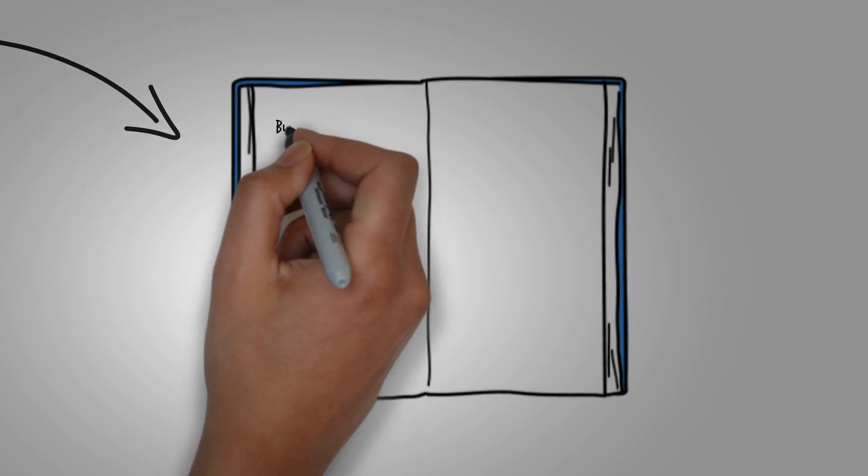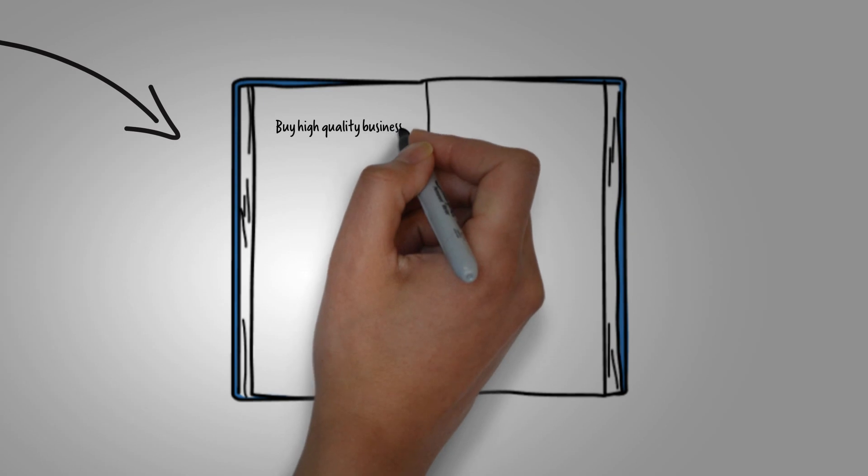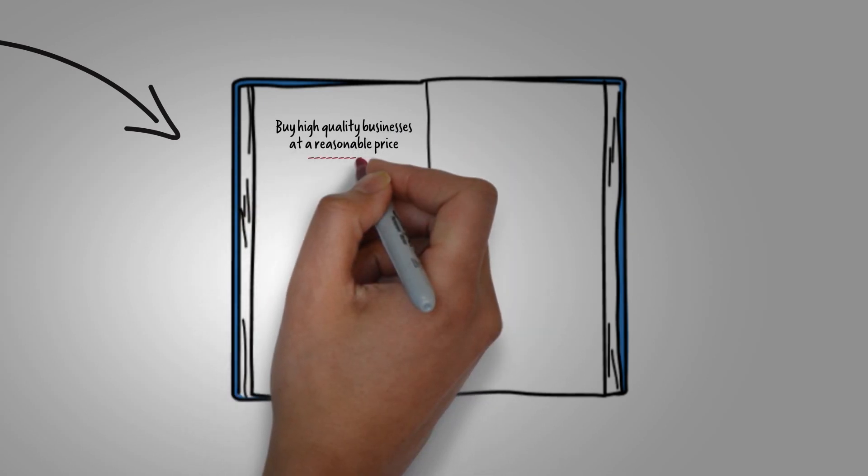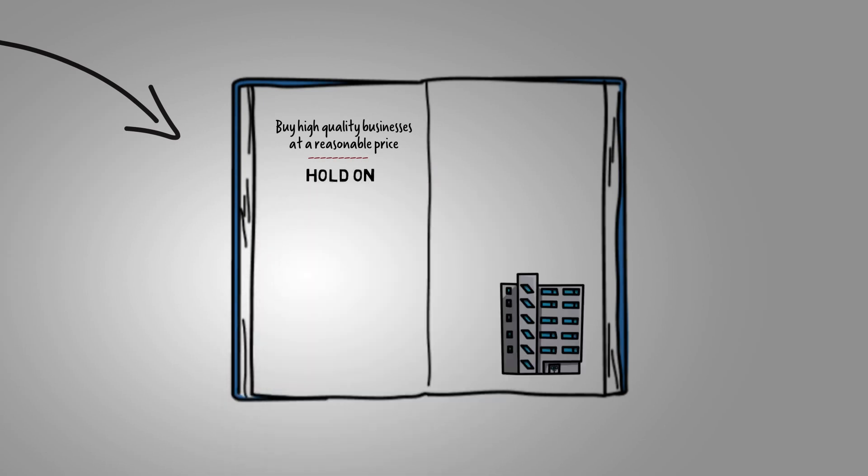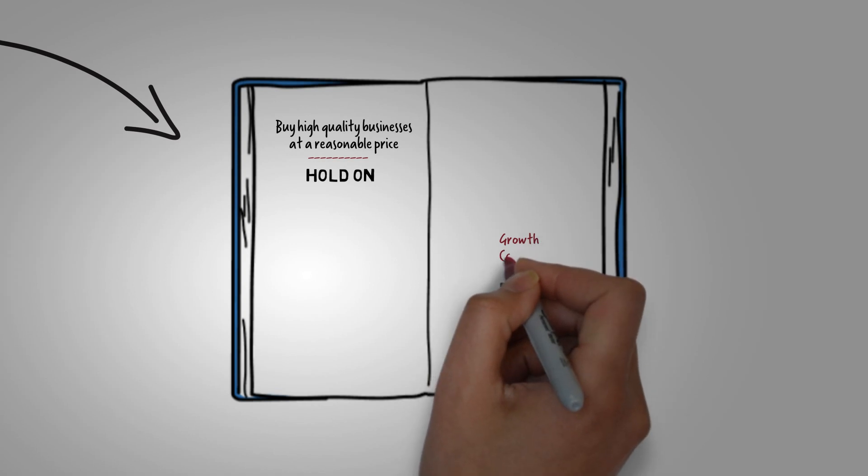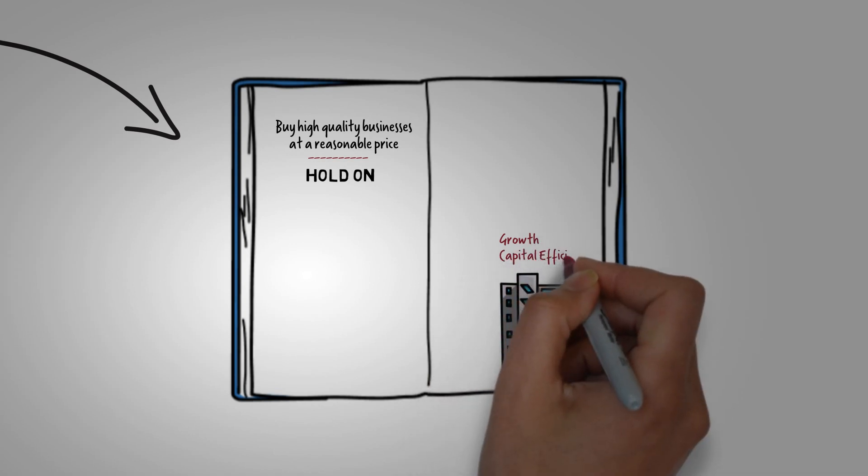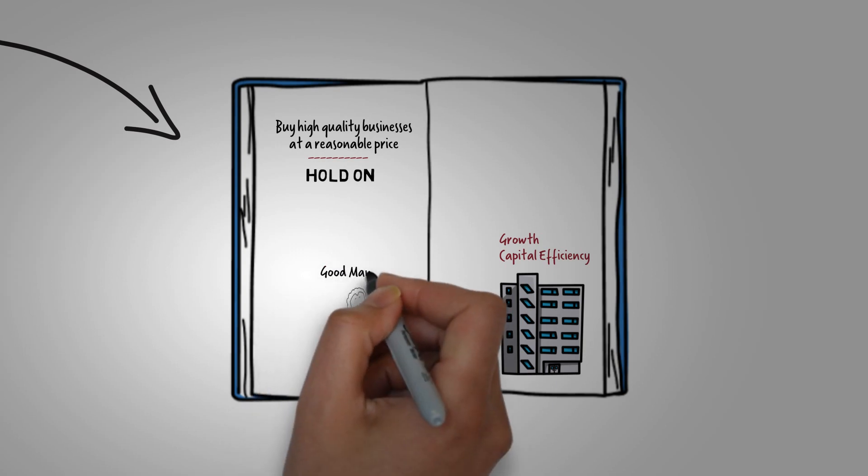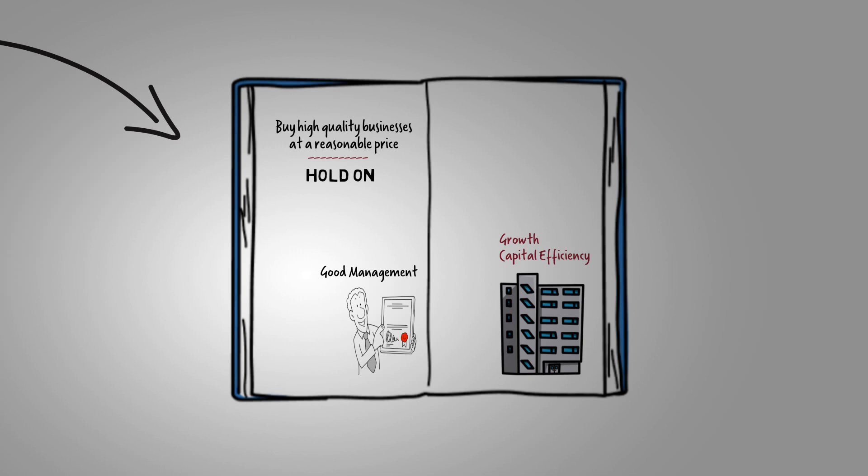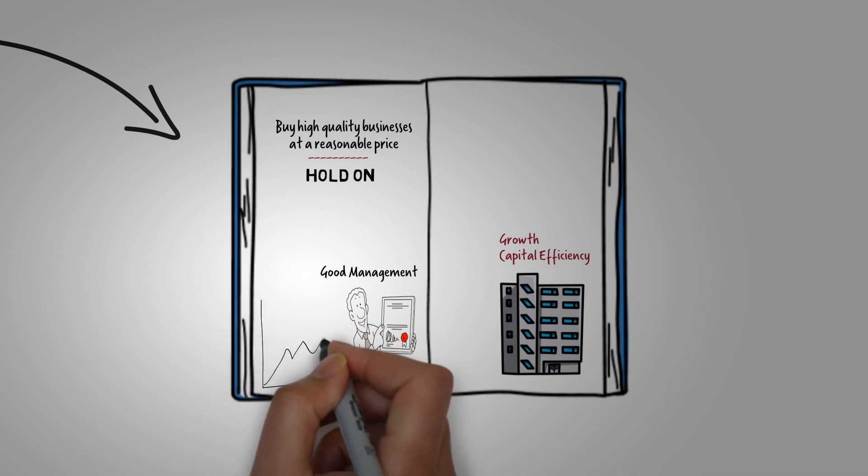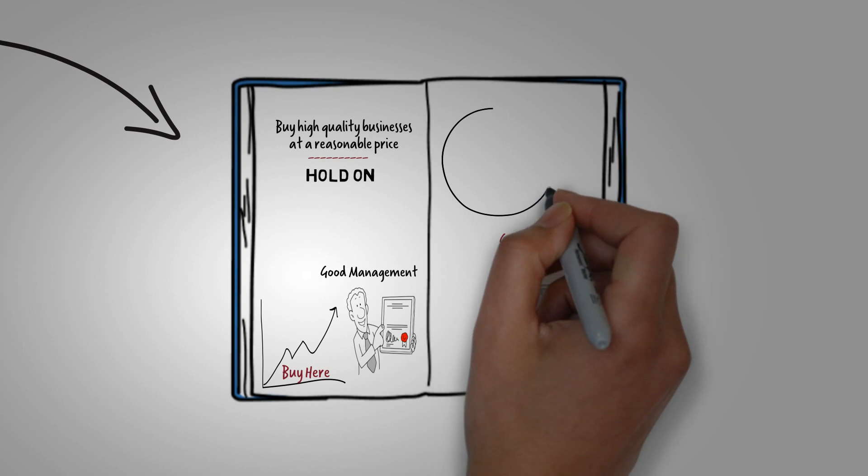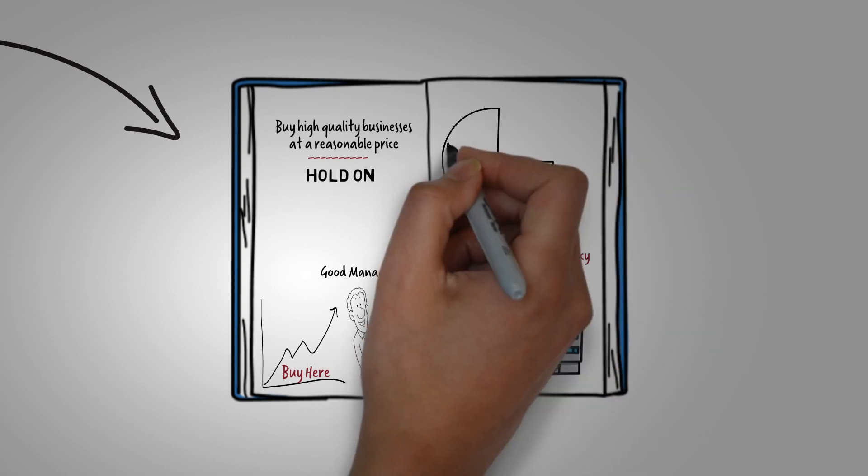The Mirai Asset Multi-Cap Fund is specifically designed to address this challenge by investing in high-quality growth businesses at a reasonable price and then holding them for an extended period. The fund's investment strategy revolves around identifying companies with promising growth prospects and capital efficiency. Additionally, the track record of the management team plays a crucial role in filtering potential businesses for investment. Valuation is another key factor considered by the fund. It aims to identify good stocks at attractive prices, ensuring a margin of safety for investors.